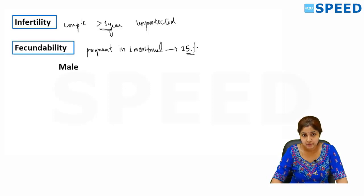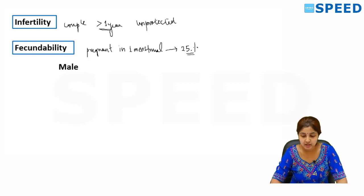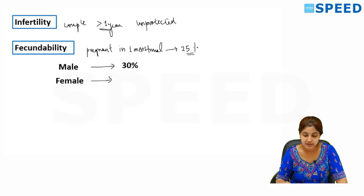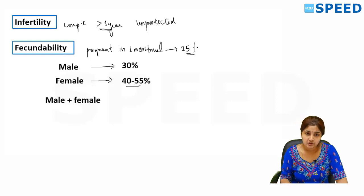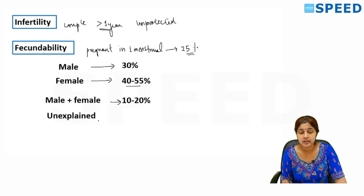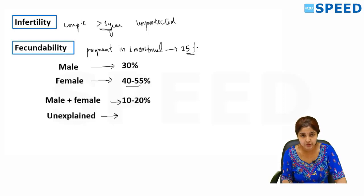Infertility needs to be dealt with as a couple, and there is no blaming of the wife or the husband. The male factor contributes to around 30% of infertility cases, whereas female factors such as ovulatory, tubal, uterine, or cervical issues are responsible for around 40 to 55% of infertility causes. Combined together it is around 10 to 20%. Sometimes there is a condition called unexplained infertility where ovulation happens, tubes are functioning, uterus and cervix are normal, and even the sperms are functioning and anatomically normal, but the woman is still not able to conceive. This happens in around 10 to 15% of people.